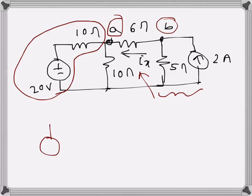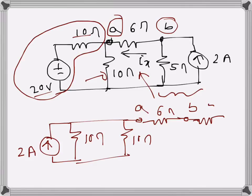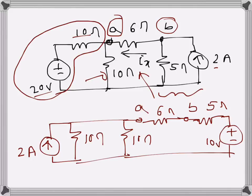The polarity will be upwards. The value of the current source will be 2 amps, because 20 volts over 10 ohms. The 10 ohms stays there, and this is the 10 ohms terminal a side. There's 6 ohms and terminal b. The other part becomes 5 ohms, and the voltage source polarity will be such that the value is 2 times 5, so that's 10 volts. Now these two 10-ohm resistors in parallel give an equivalent of 5 ohms.